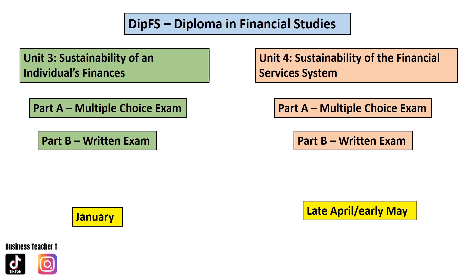Then you will study Unit 4, Sustainability of the Financial Services System. Part A is the Multiple Choice Exam and Part B is the written exam, which you'll sit in late April or early May. Again, you'll have the resit opportunity in June.